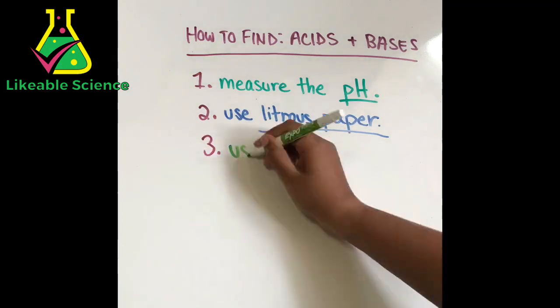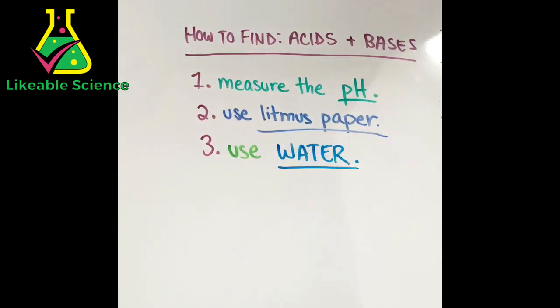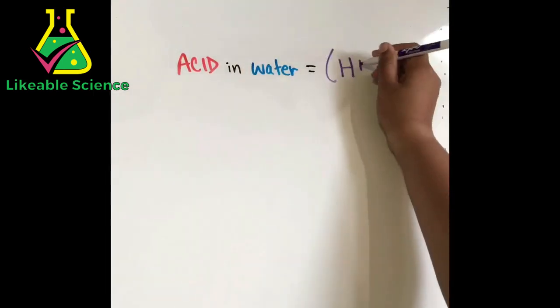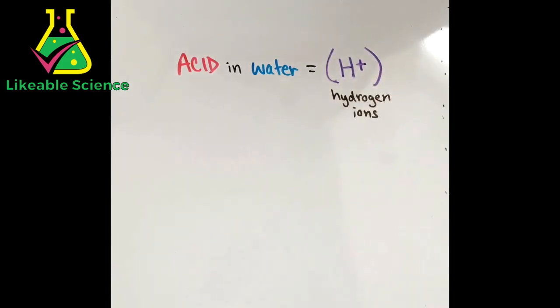Another way to identify an acid or a base is to put the substance in water. If you put an acid in water, it will produce H+ hydrogen ions. The stronger the acid is, the more hydrogen ions it will produce.